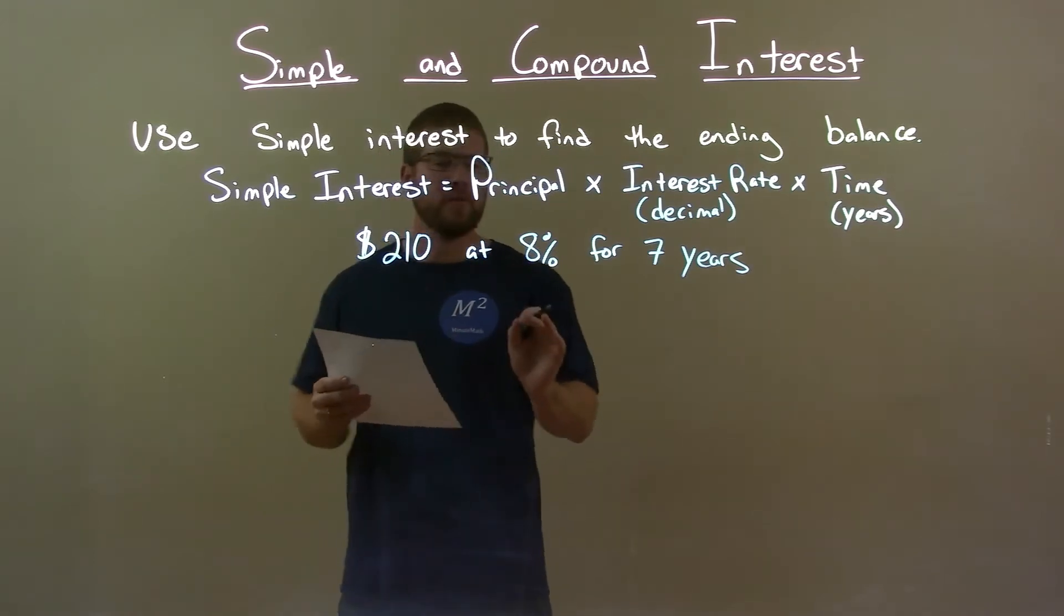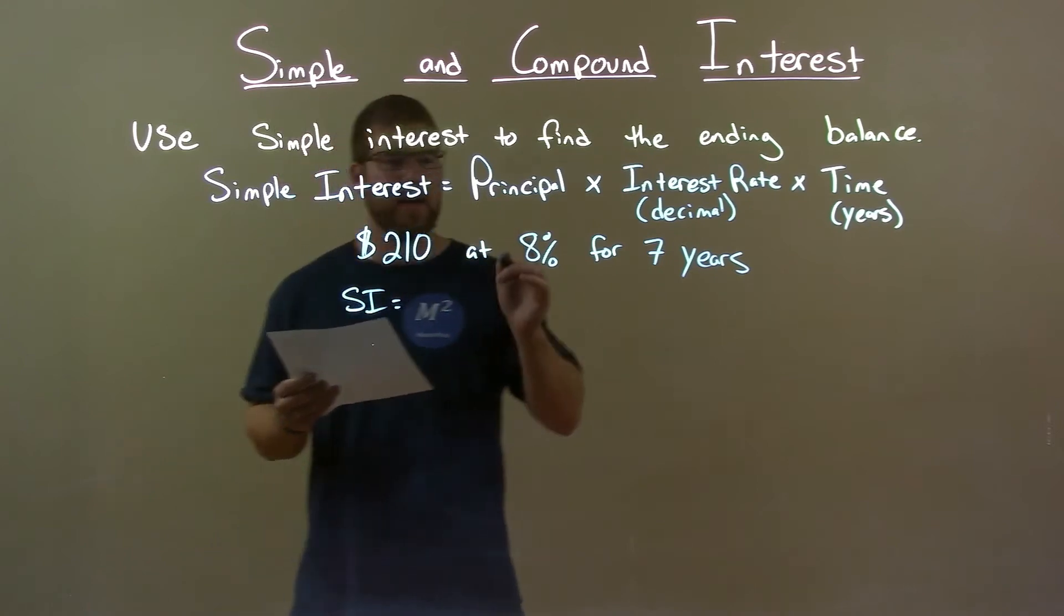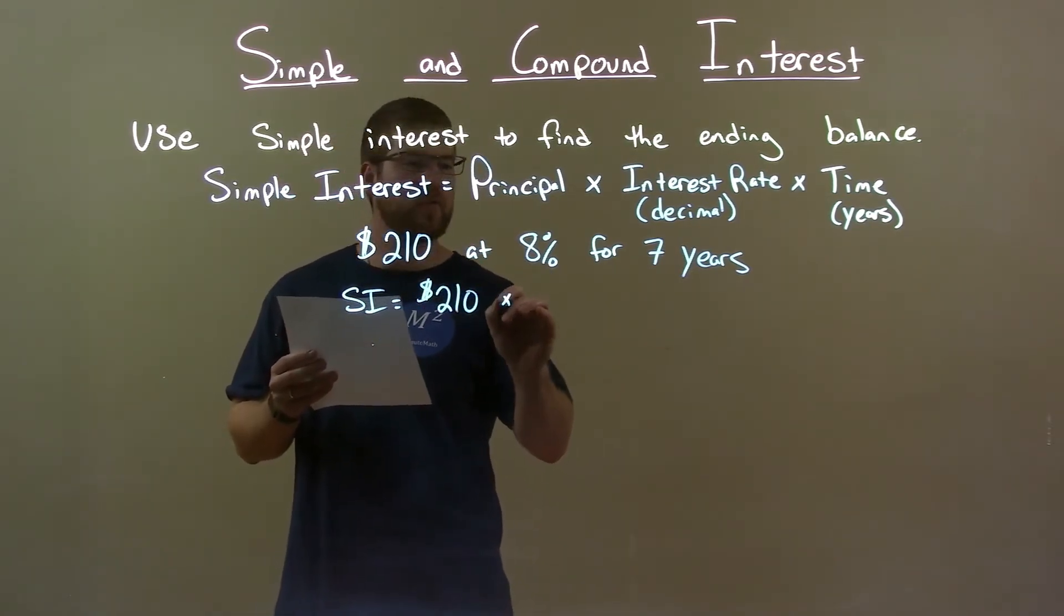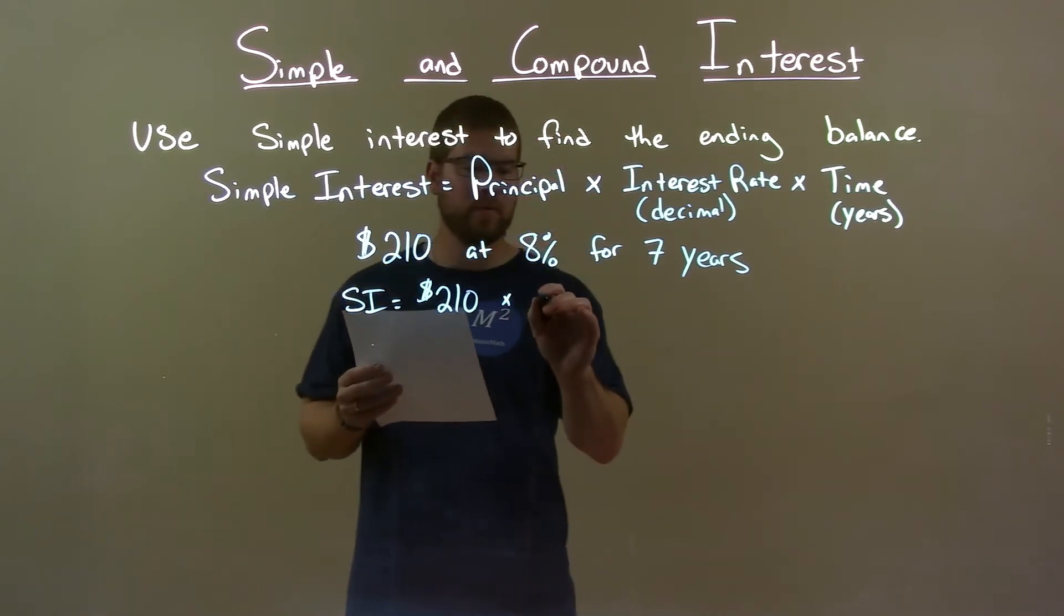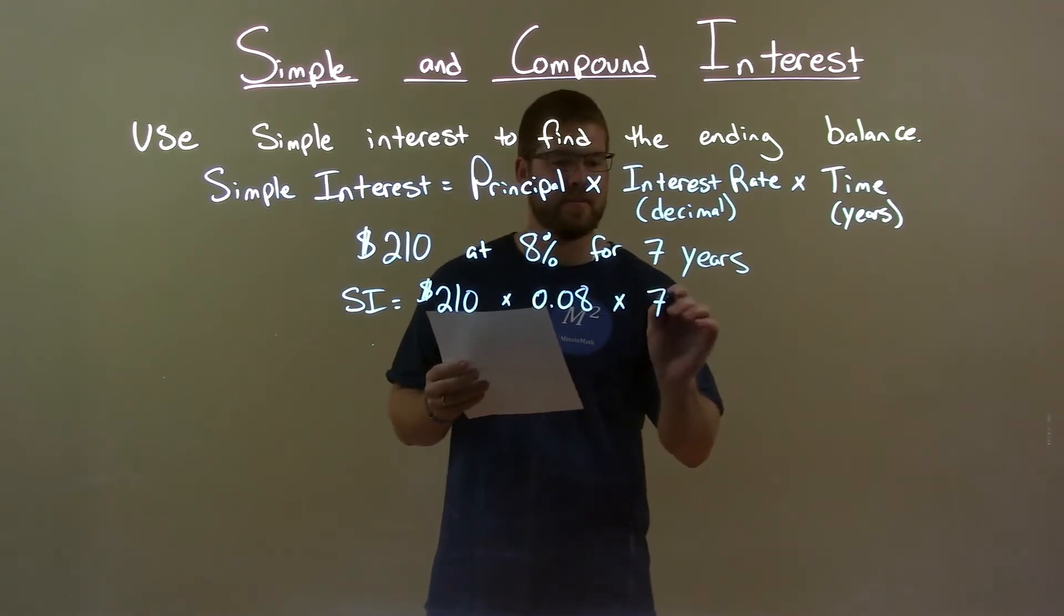What I want to first do is calculate the simple interest. So my simple interest, using my formula, is my principal which is $210 multiplied by my interest rate as a decimal. 8% is 0.08 as a decimal, and our time in years is 7.